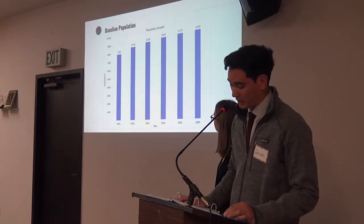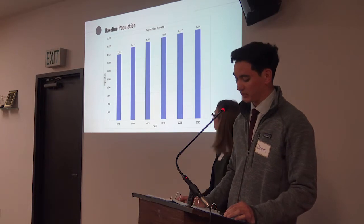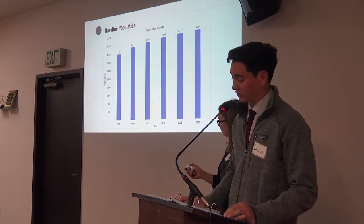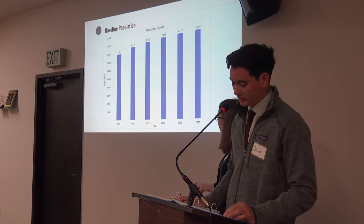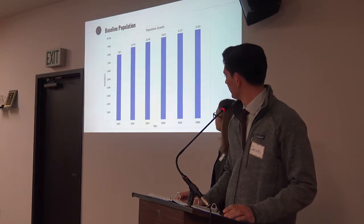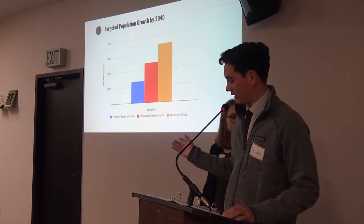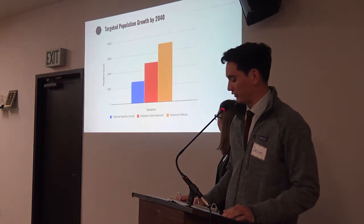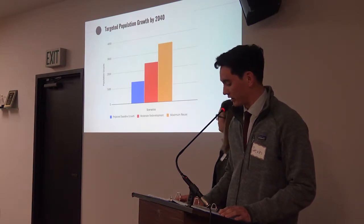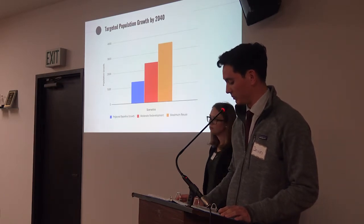In 2015, the population in Oceano was approximately 7,800. For the baseline growth alternative, the population is expected to grow to approximately 9,200 people by 2040, an increase of over 1,300 people during the 25-year span, calculated according to natural factors such as birth, death, and migration. This chart represents the growth targets for the moderate and maximum alternatives, shown in red and gold respectively. The population increase by 2040 in the moderate growth scenario is to be over 2,400 people, while in the maximum growth scenario, population increase is to be over 3,400 people.